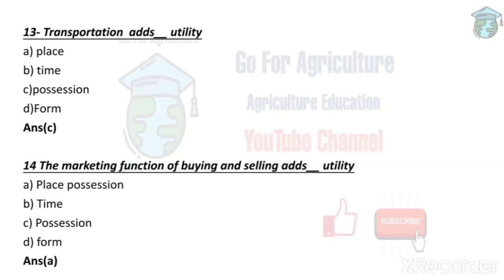Transportation adds possession utility. Basically, possession utility means if you exchange any kind of product that has monetary value, that is called possession utility. Transportation is also a form of possession utility. The marketing function of buying and selling goods adds place utility.